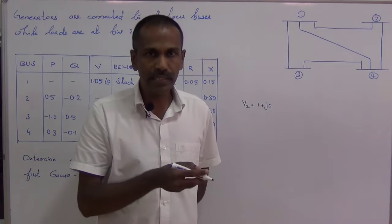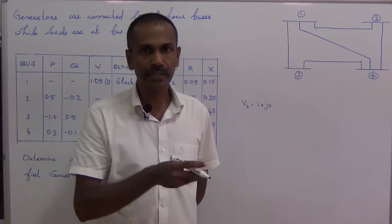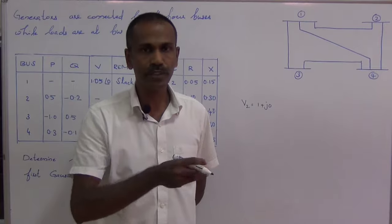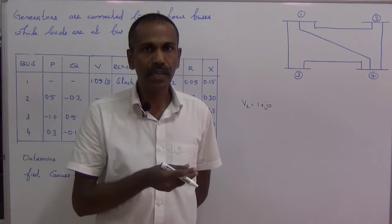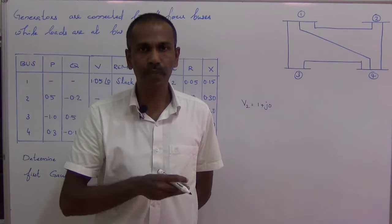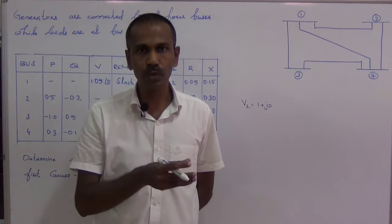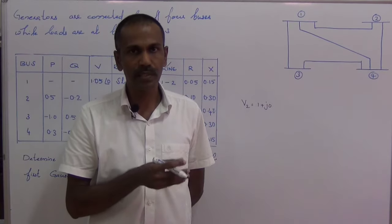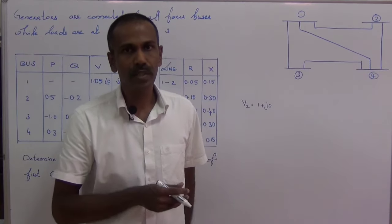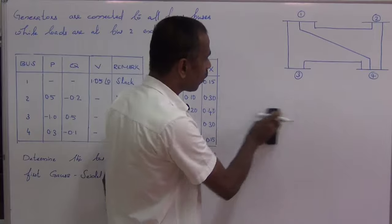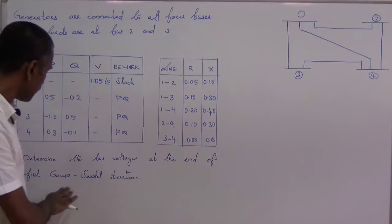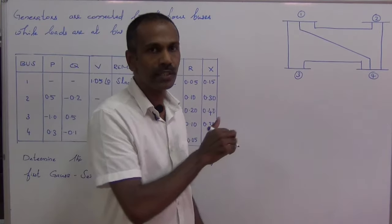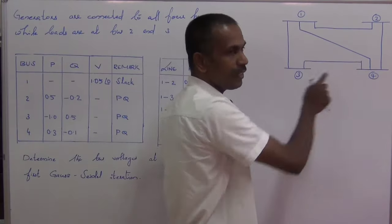Then at the end of the second iteration, we get a better answer — we get closer to the actual voltage by one more step. So if we conduct some hundred or two-fifty iterations, we get very close to the actual voltage. Usually we use digital computers to perform these iterative methods. But here, we have to conduct only one iteration. At the end of the first iteration, we have to find out the four bus voltages V1, V2, V3 and V4.